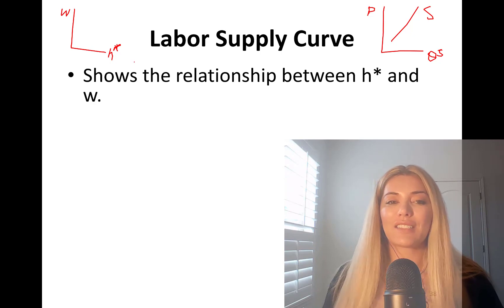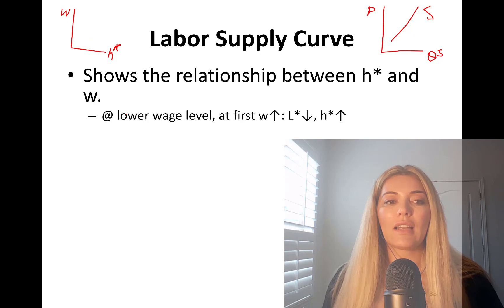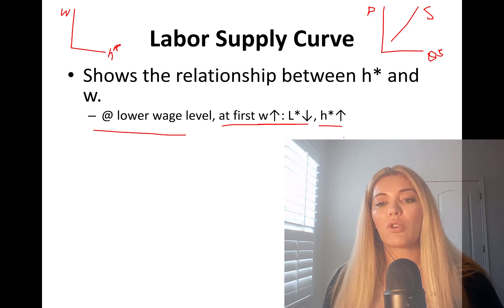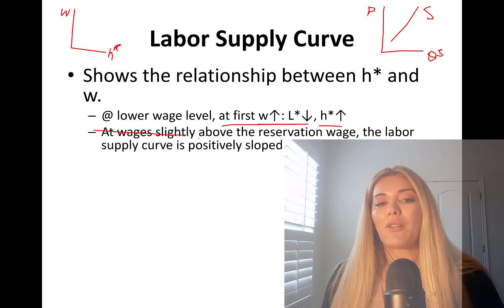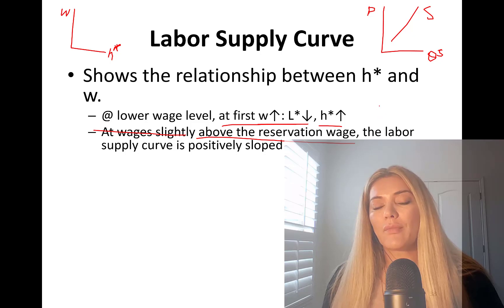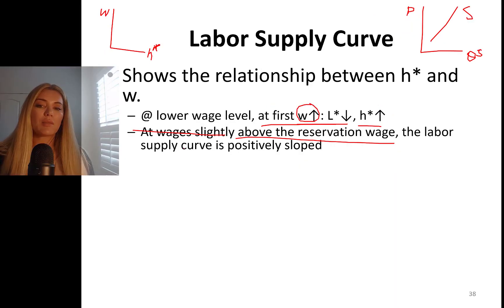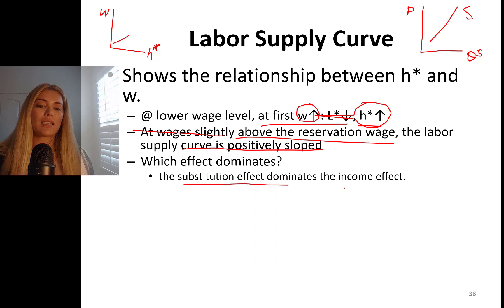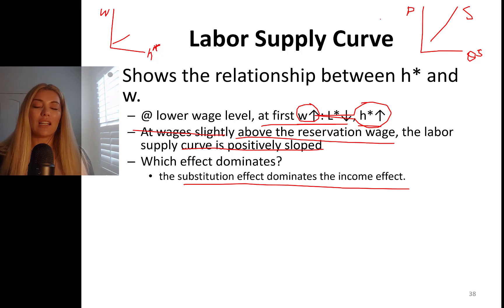From the comparative statics analysis we did in previous parts: at lower wage levels, as wages go up you're going to see leisure go down and hours of work go up. This is slightly above the reservation wage rate. The labor supply curve has a positive slope — wages go up, hours of work go up. Which effect is dominating? The substitution effect. Wages went up, leisure is relatively more expensive, so people increase hours of work and cut down on leisure.